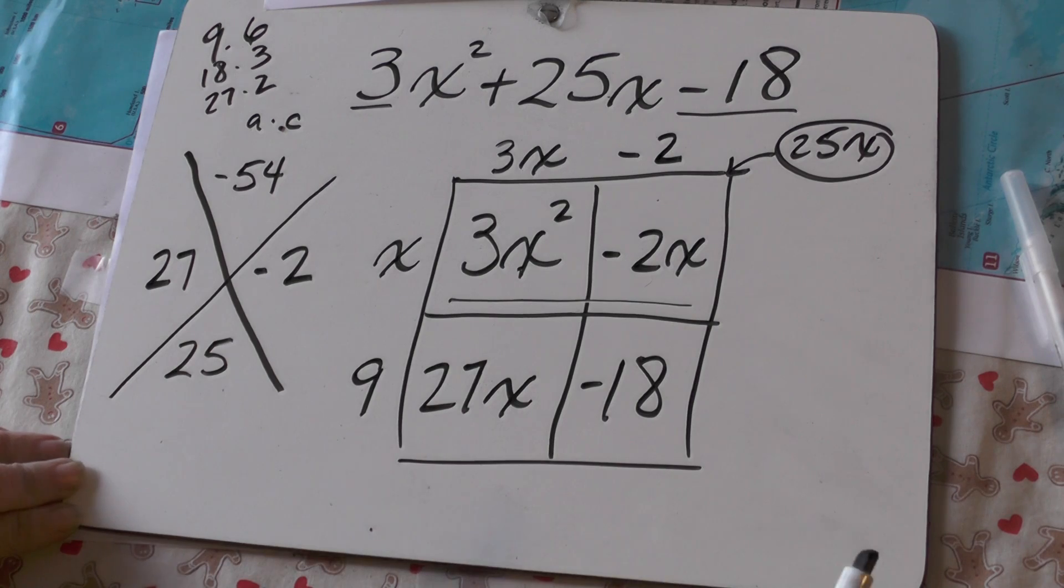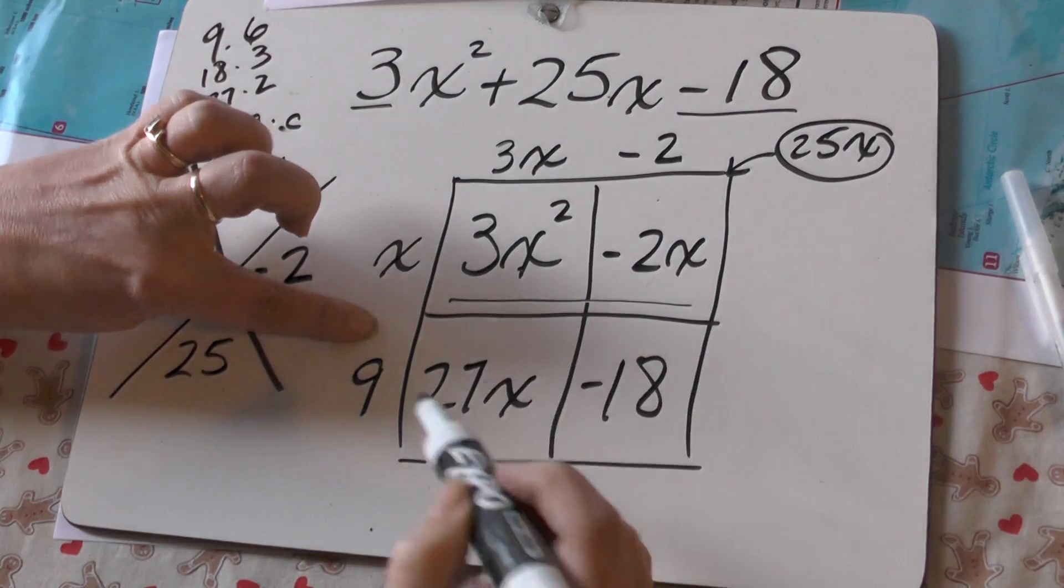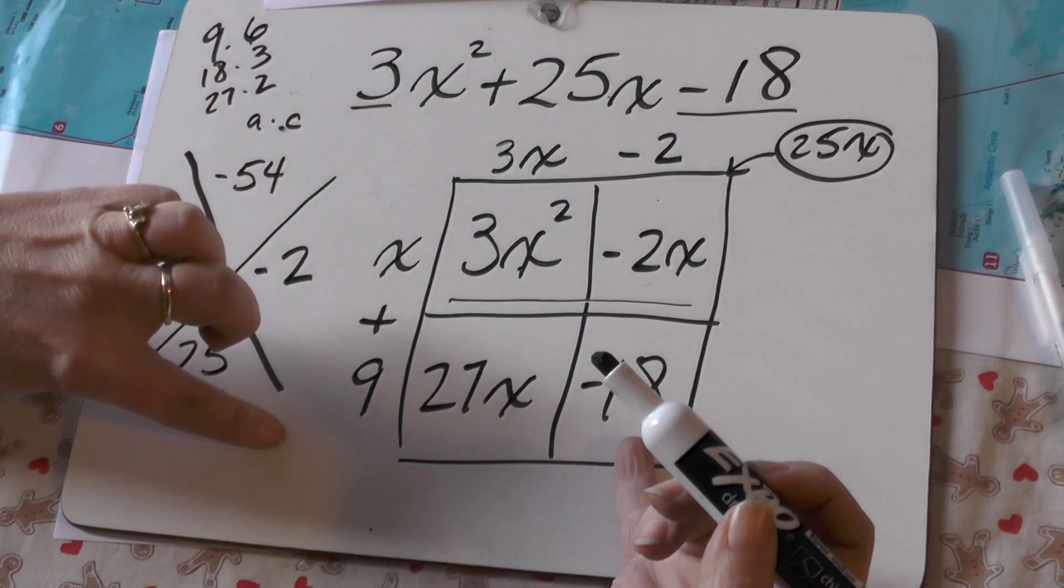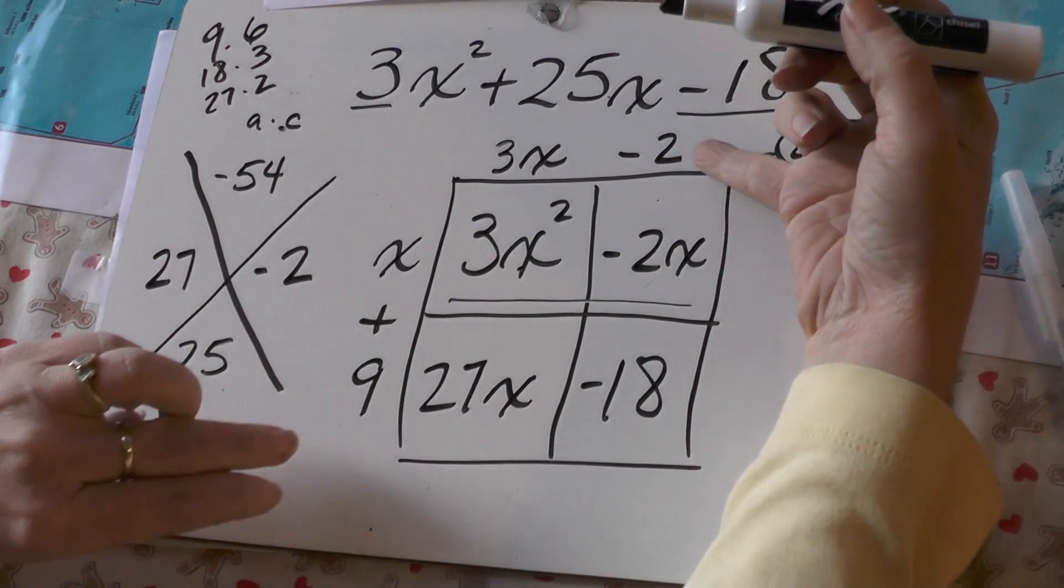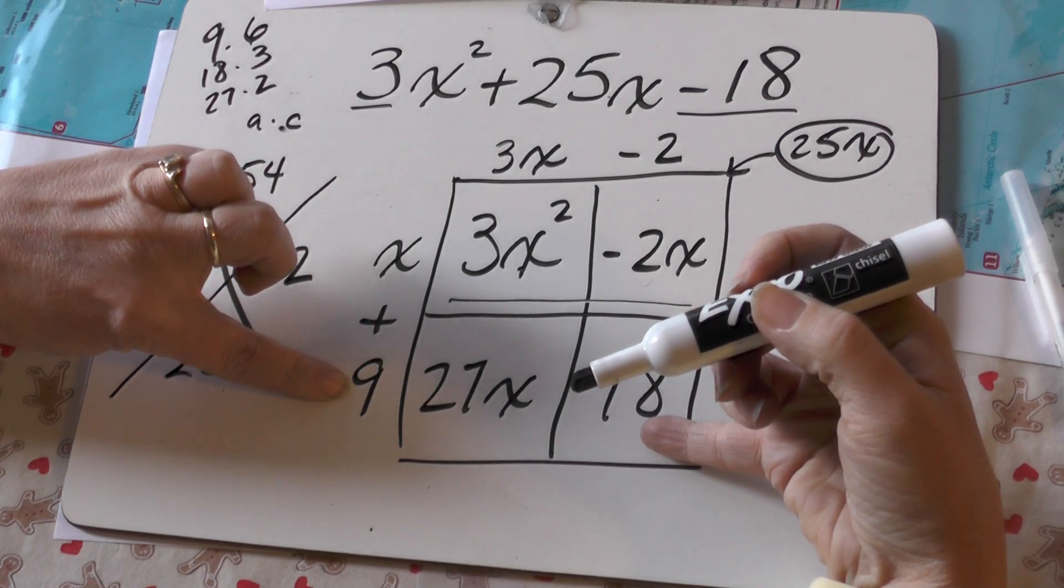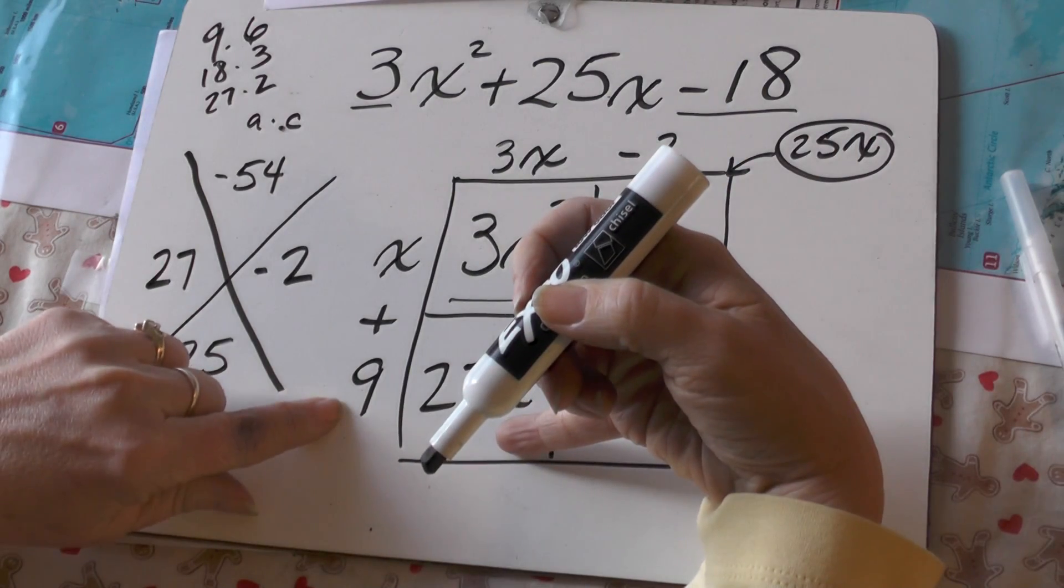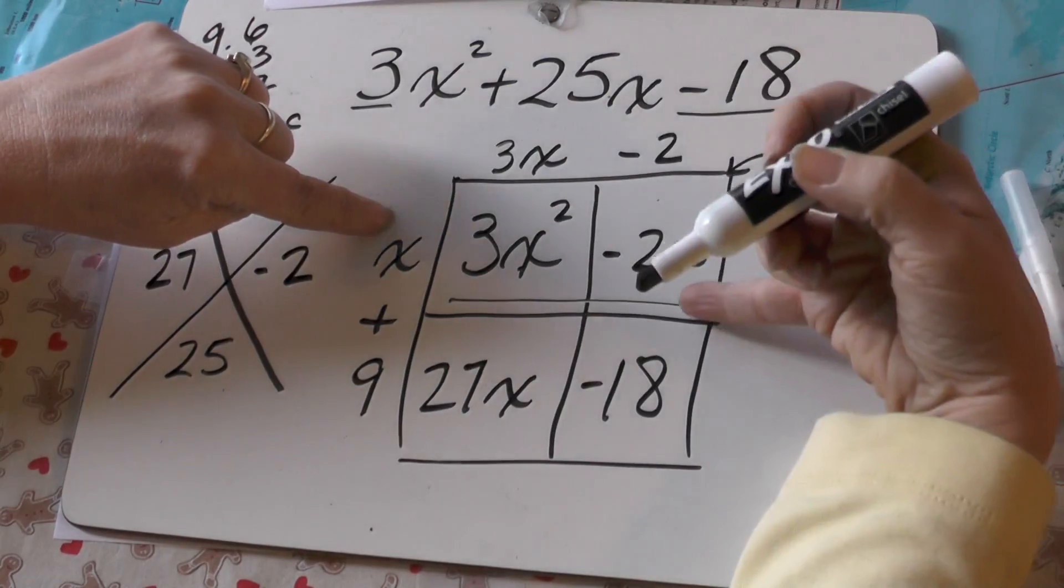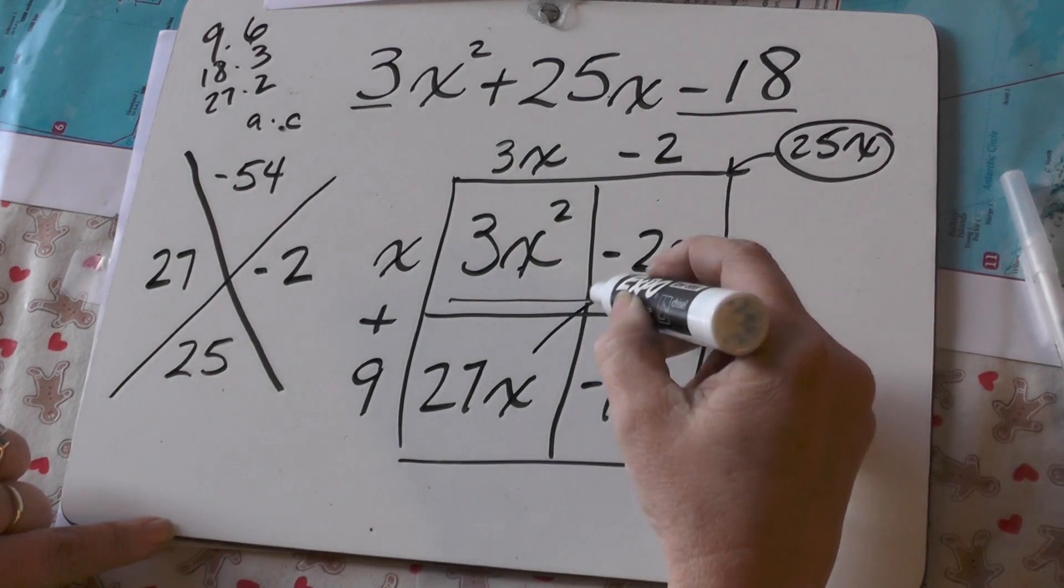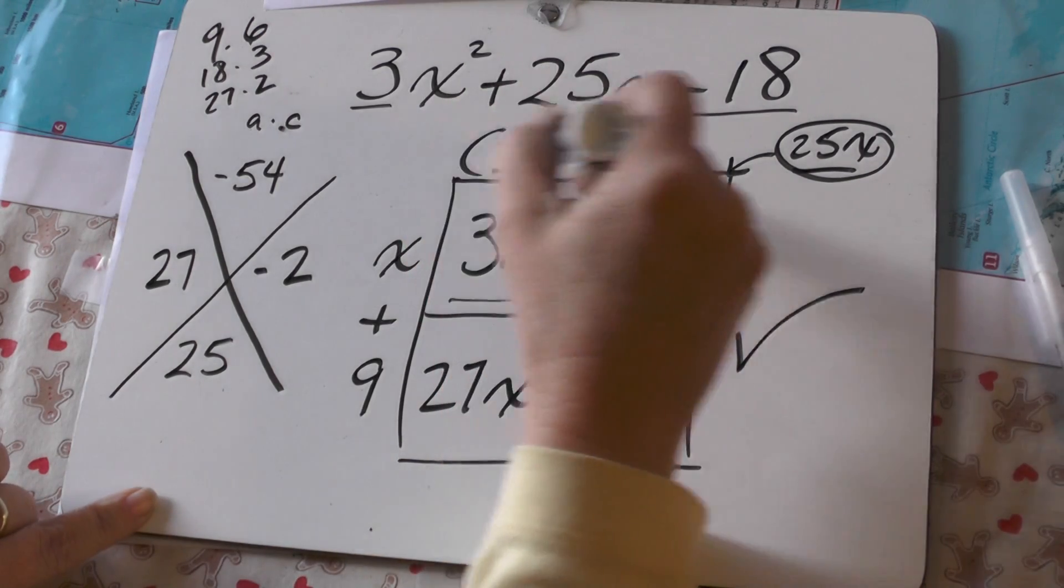And now, the only thing I really have to think about is this sign. But, of course, to get negative 18 on the end, that's going to have to be a plus. That's the only way I can get negative 18. And let's just double-check it. 2 times negative 2 times 9 is negative 18, right? Okay. 3x times x is 3x squared. 3x times 9 is 27x. x times negative 2 is negative 2x. These add up to 25x. There is my factorization right here.